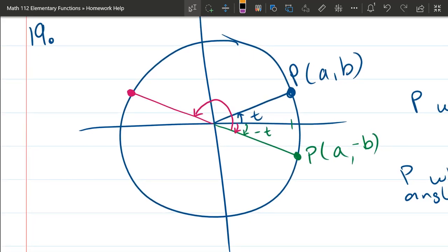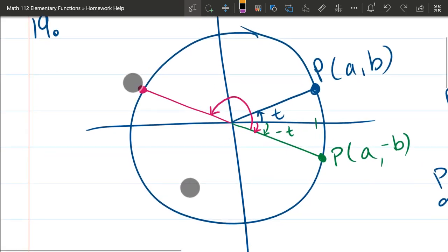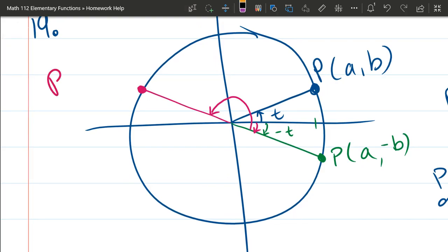All of these have the same reference angle. So if you think in terms of reference angle, they all have the exact same reference angle, which would be t. The coordinates of this point that I drew over here are going to be slightly different, and I don't want to ruin the problem for you. But you should be able to tell which coordinate went negative and which coordinate stayed positive.